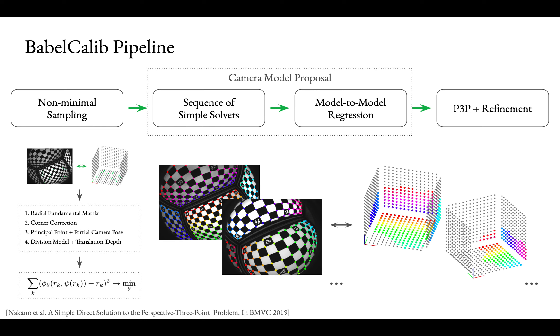Given an estimate for the intrinsics, we fit camera poses for all the remaining images using P3P solver. This gives us the full model proposal to evaluate. For robustness against bad detections, we wrap the model estimation in a RANSAC framework.